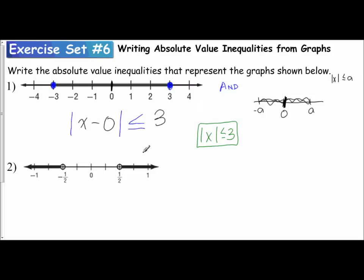It's the same idea here. If this is pointing to the outside, that tells me this is an or, which means greater than. So I'm going to put my absolute value bars. They're open circles, so I'm just going to put it greater than.